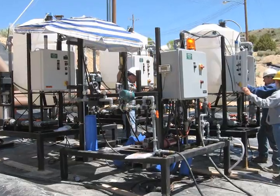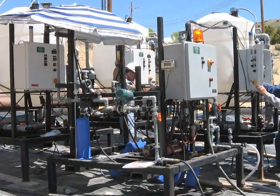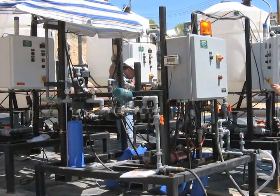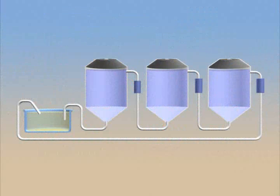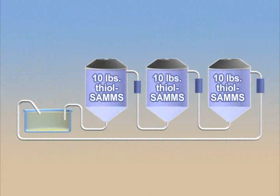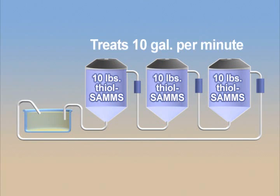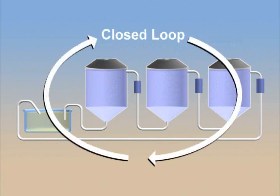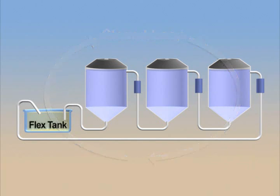The SES CSTR unit consisted of three modules equipped with pre- and post-filtration systems. Each tank contained 10 pounds of thiol-SAMs with the capacity to treat 10 gallons of spent solution every minute. The test was conducted as a closed loop, meaning the treated solution was pumped back into the source flex tank.